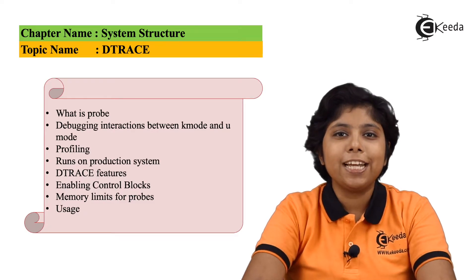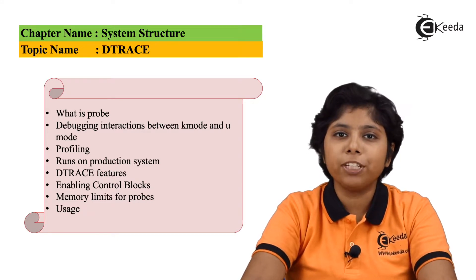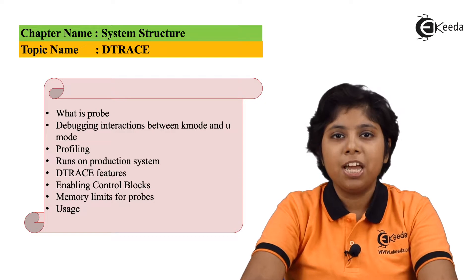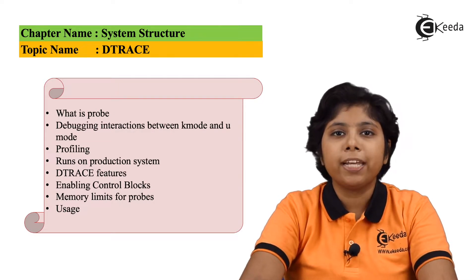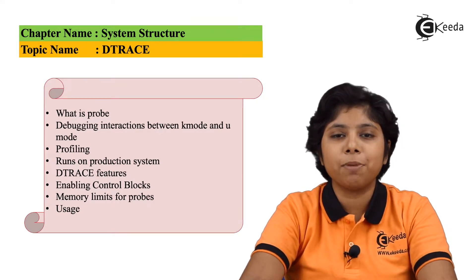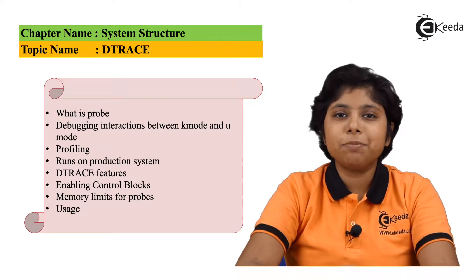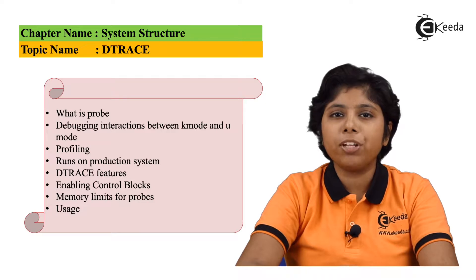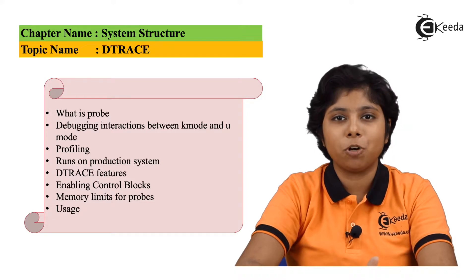DTrace is a facility that dynamically adds probes to a running system, both user and the kernel. This querying language using DTrace can give us an overwhelming amount about the state of the kernel, the system state, and other processor attributes. The system call IOCTL along with other functional calls are included in the kernel to perform the functions of the system call.